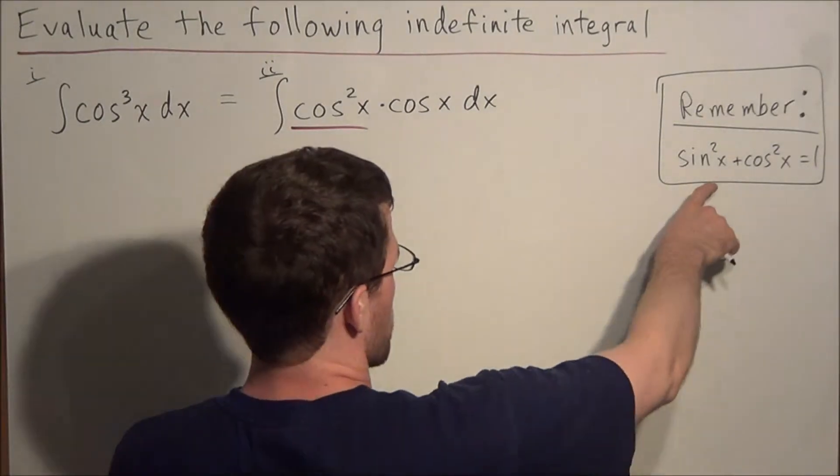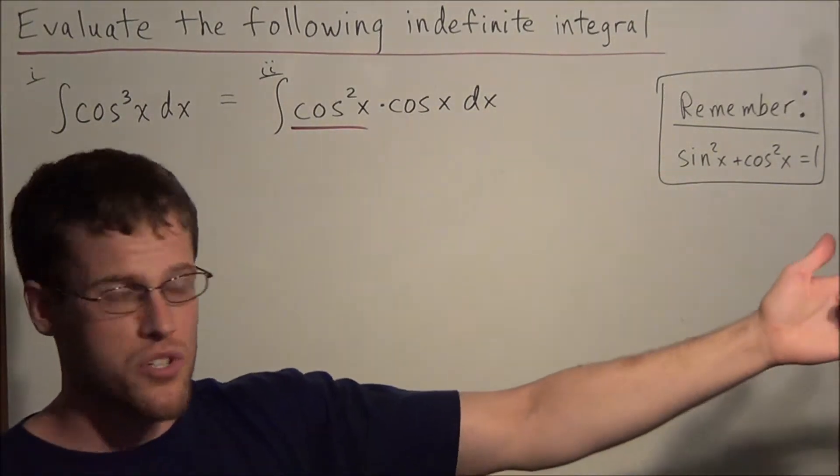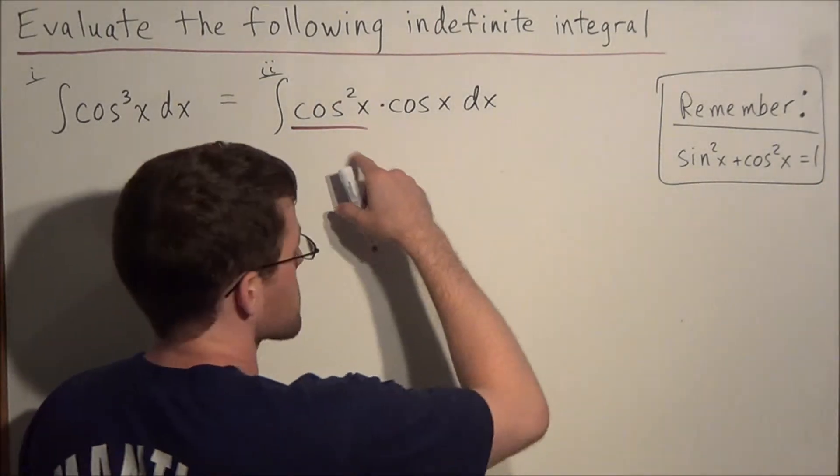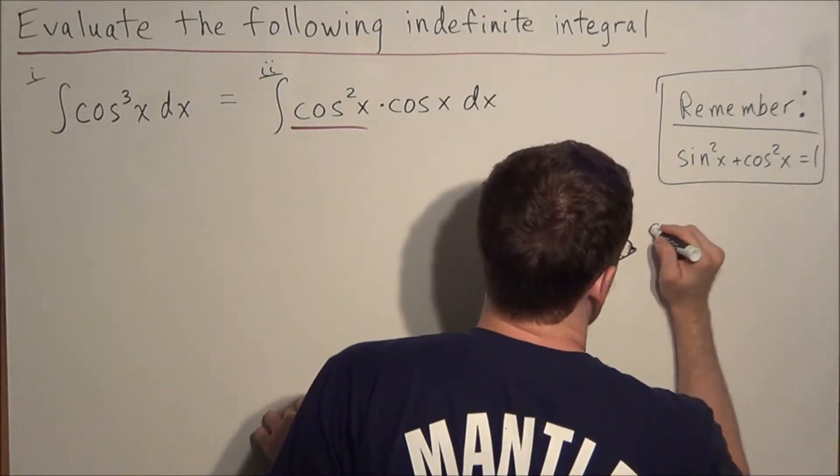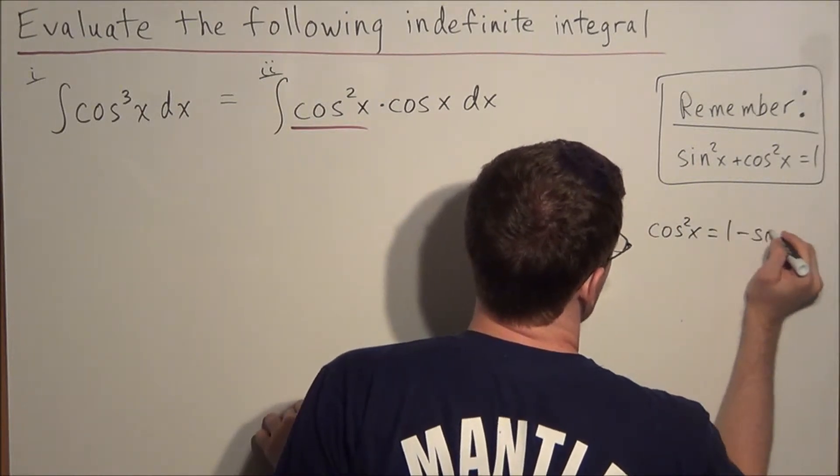From our Pythagorean equation, this is one of the trig identities, the most basic one that we should all know. We could substitute for cosine squared x, but we have to note that cosine squared x is equal to 1 minus sine squared x.